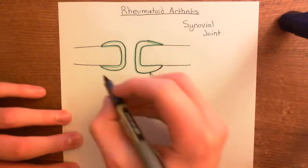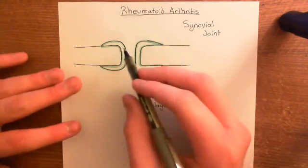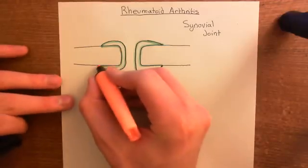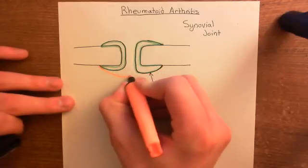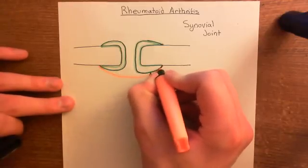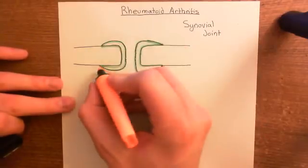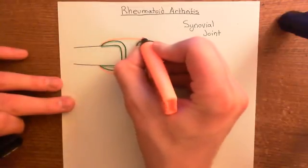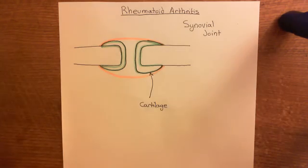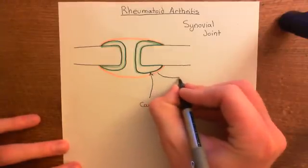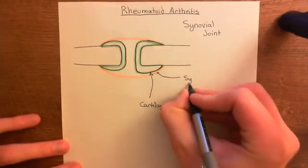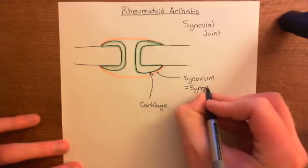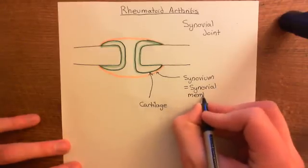The next thing you have is a joint capsule that surrounds the whole structure. Joint capsules are made up of two layers. The first layer is the synovium, also called the synovial membrane. The synovium attaches at the junction between the bone and the beginning of the cartilage covering. Synovium is just another word for the synovial membrane — people often use the term synovium rather than synovial membrane.